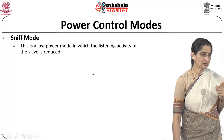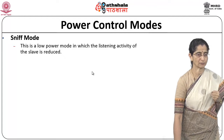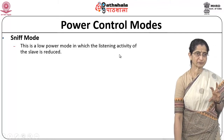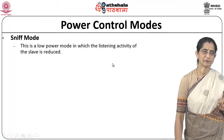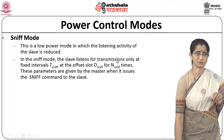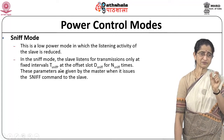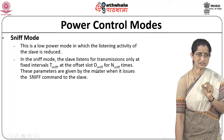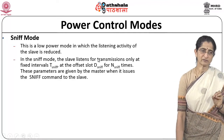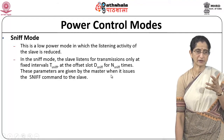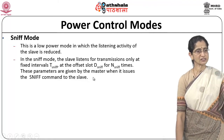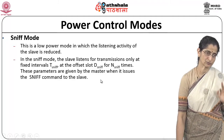Since Bluetooth is a low-power protocol, various power control modes are used. The Sniff (SNF) mode is a low-power mode where the listening activity of the slave is reduced. The slave listens for transmissions only at fixed intervals — TSNF at a particular offset slot DSNF, for NSNF amount of time. These parameters are given by the master when it issues a sniff command to the slave, telling it to go into sniff mode and listen only at these periods.